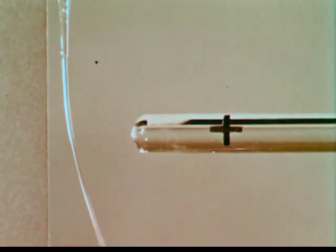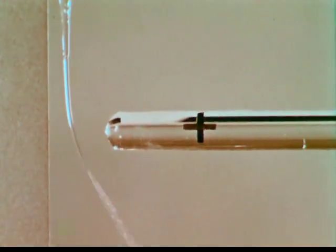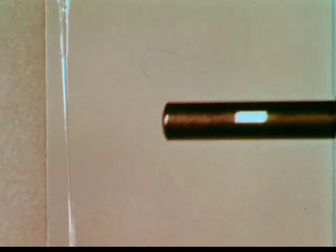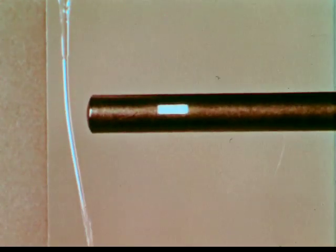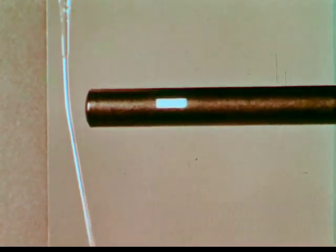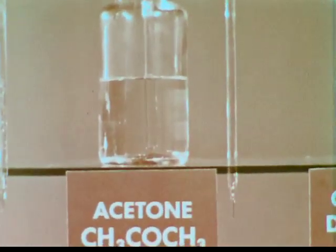So we can understand why a molecule with a shape like water can be attracted by a positively charged rod. Our model also explains the attraction by a negatively charged rod. But let's see if our model applies to the behavior of our other deflected substance, acetone.